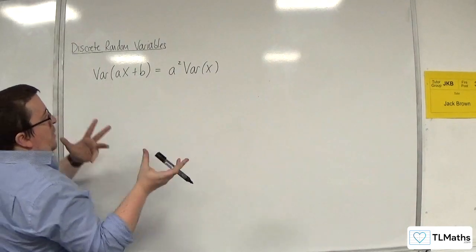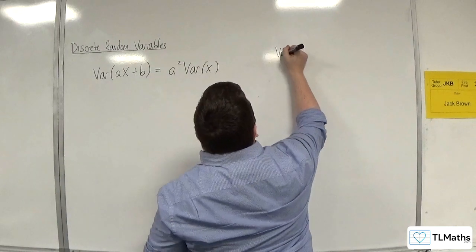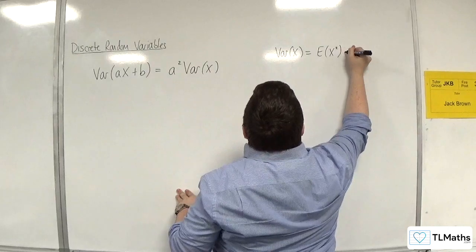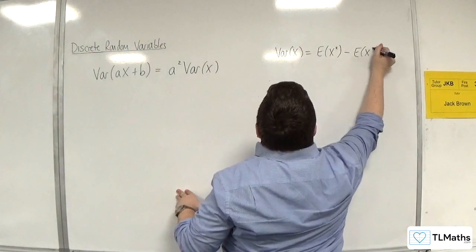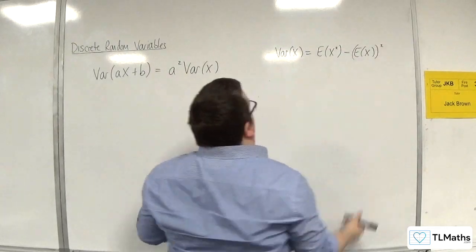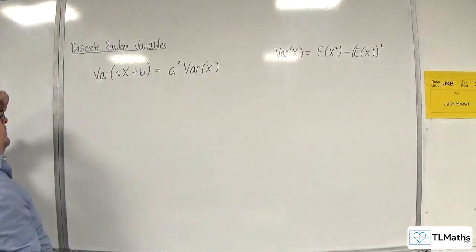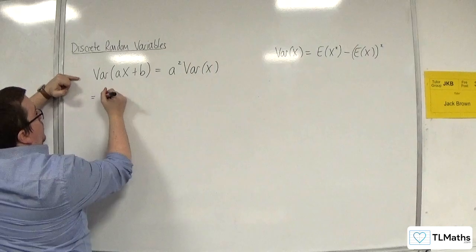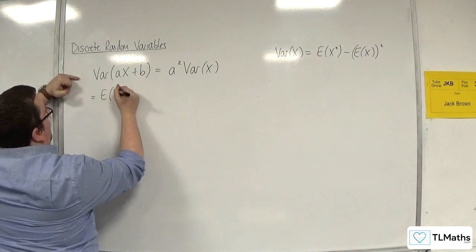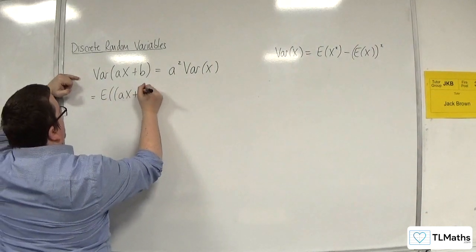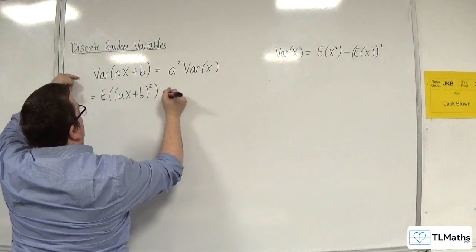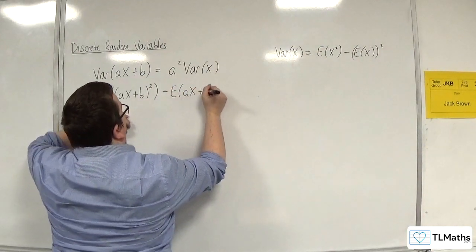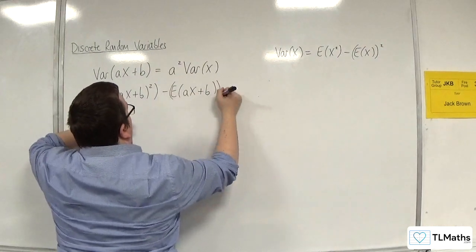We know that var of x is e of x squared take away e of x all squared. So var of ax plus b would be equal to e of ax plus b squared take away e of ax plus b squared.